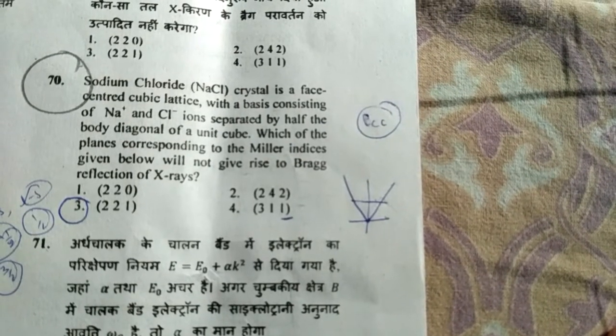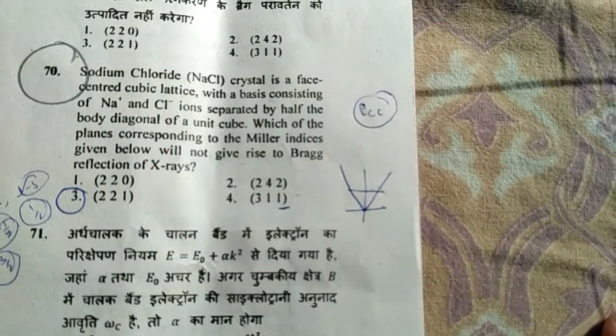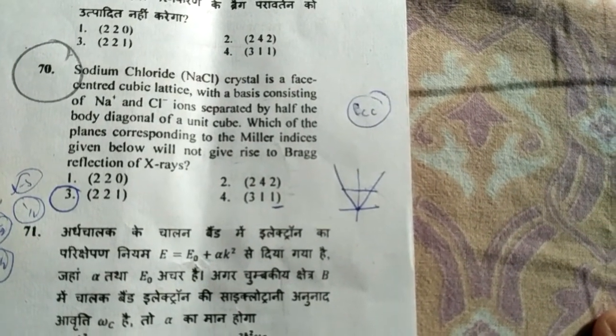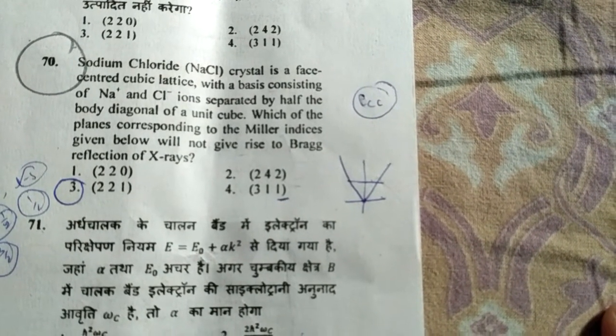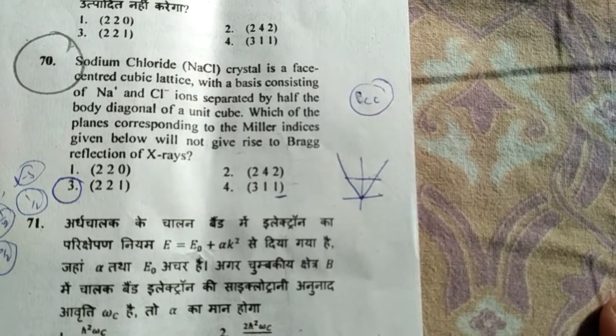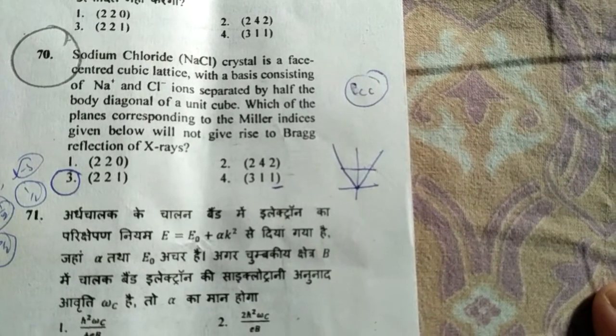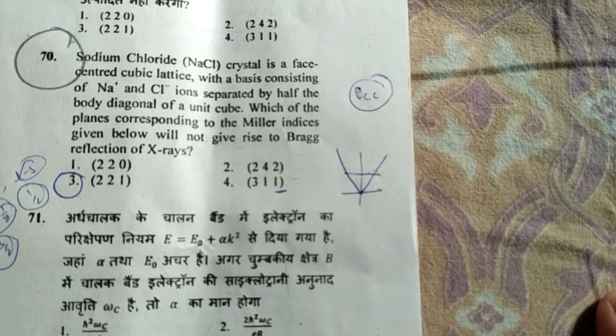Sodium chloride crystal is an FCC cubic lattice which basically consists of Na plus and Cl minus ions separated by half of the body diagonal of a unit cube. Which plane corresponding to the Miller indices given below will not give rise to Bragg's reflection?